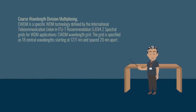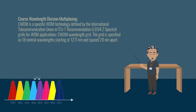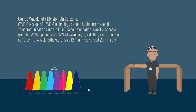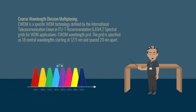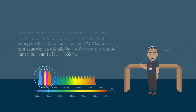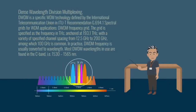The CWDM wavelength grid is specified as 18 central wavelengths starting at 1271 nanometers and spaced 20 nanometers apart. DWDM frequency is usually converted to wavelength, and most DWDM wavelengths in use are found in the C-band, that is 1530 to 1565 nanometers.